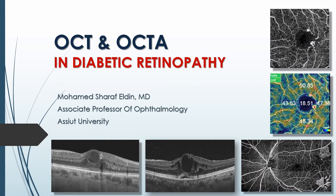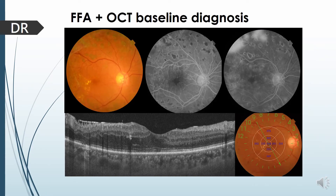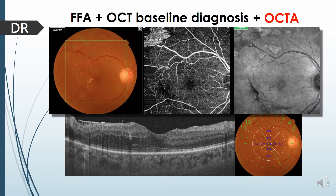In diabetic retinopathy, I want to stress that the combination of fundus fluorescein angiogram and OCT as a baseline in diagnosis is very crucial in all cases. The addition of OCT angiography gives a little bit more information, especially for capillary perfusions and in selected cases where fundus fluorescein angiography cannot be performed, such as in asthmatic patients or those with renal failure.